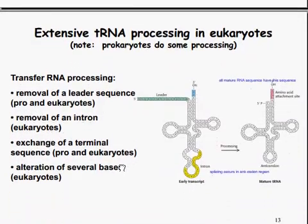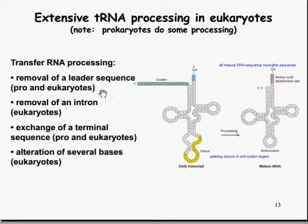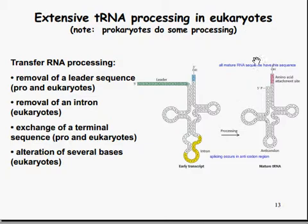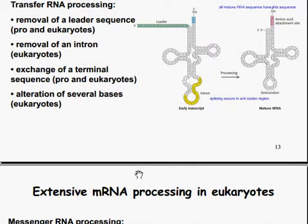There's also quite a lot of processing that occurs in tRNAs in eukaryotes. Note that prokaryotes do some processing as well. For tRNA processing: there is removal of a leader sequence, which is capped off in both pro- and eukaryotes; removal of intron sequences; exchange of the terminal sequence; and the alteration of several bases. All mature tRNA sequences have a CCA tail at the 3' hydroxyl end. The splicing occurs in the anticodon region in the loop.